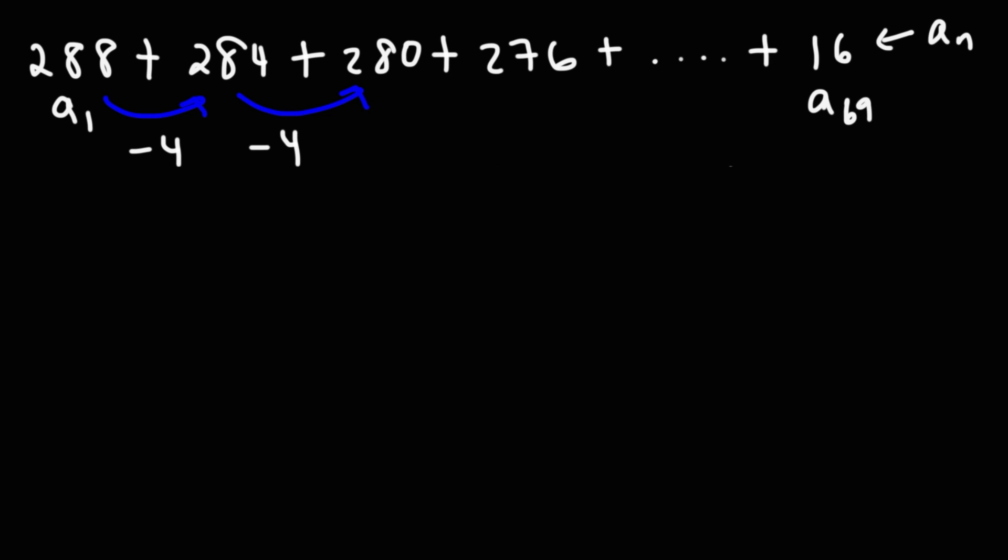So now that we know how many terms are in the sequence, we can now calculate the sum using this formula. So it's going to be the first term plus the last term divided by 2 times the number of terms.